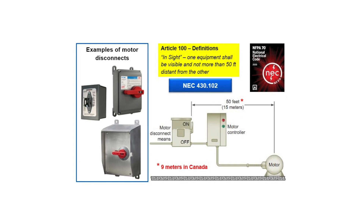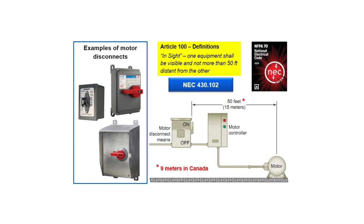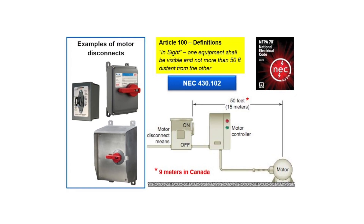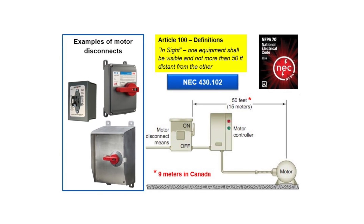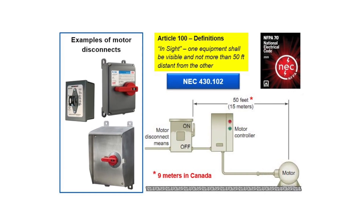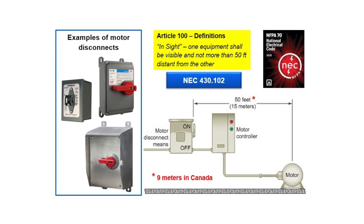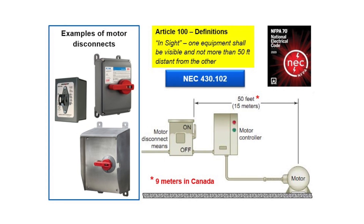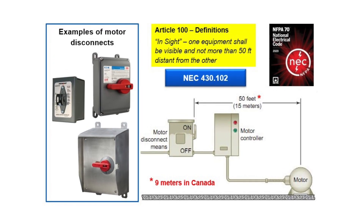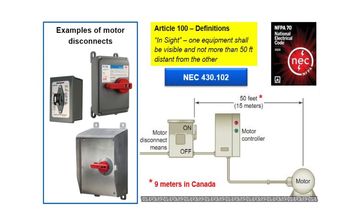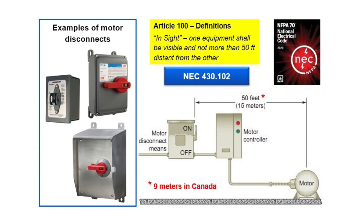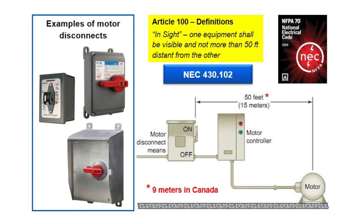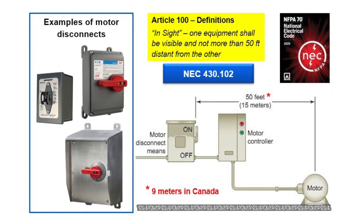There's one more important requirement for these devices, and it deals with location. In general, the disconnecting means must be in sight of either the motor controller or the motor itself. The term 'in sight' means the two pieces of equipment must be clearly visible from each other's location and no more than 50 feet apart. This is to ensure a lockout/tagout provision is readily available for safety. Note that in Canada, this in-sight distance is only 9 meters, which is a little less than 30 feet.